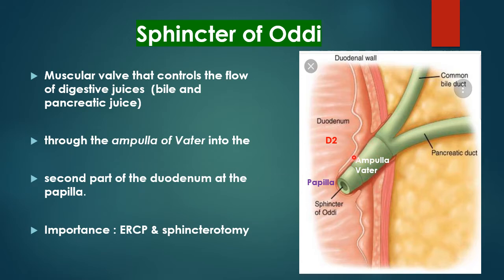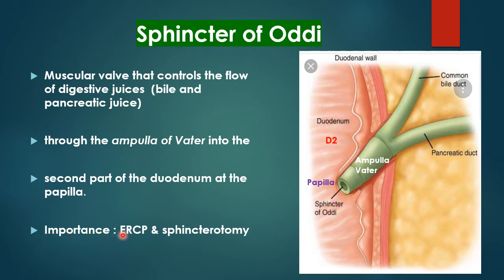Close-up view of the ampulla of Vater and the sphincter of Oddi: the fourth part of the CBD forms the ampulla of Vater, created by the common bile duct and pancreatic duct within the wall of the second part of the duodenum. It ends at the sphincter of Oddi — a circular muscle covering the tip of the ampulla of Vater which controls the flow of bile and pancreatic juice into the duodenum. This is a very important structure especially in ERCP and sphincterotomy, where the sphincter of Oddi is identified as the papilla.